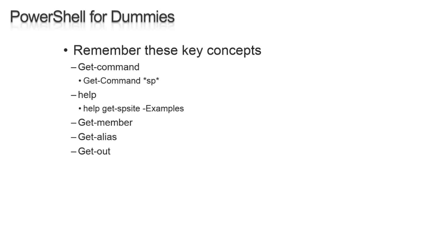All of the SharePoint cmdlets have a noun that starts with SP. So Get-Command *SP* will get you the SharePoint cmdlets. This session is focused on SharePoint 2010, but all of this will work with SharePoint 2013 as well. SharePoint 2010 sits on top of PowerShell version 2, but all of this will also work with PowerShell version 3, which is what SharePoint 2013 uses. Once you do Get-Command, you can start figuring out which nouns and verbs you want to work with.